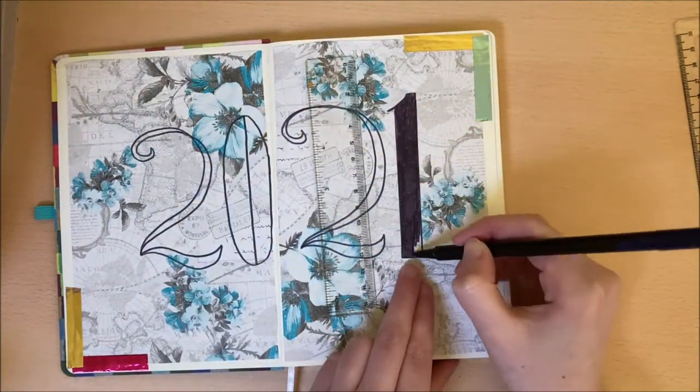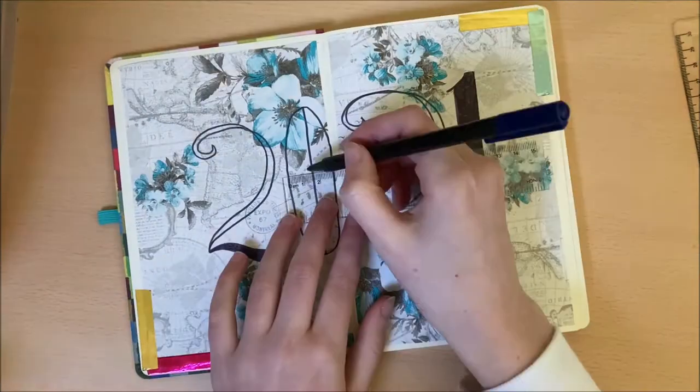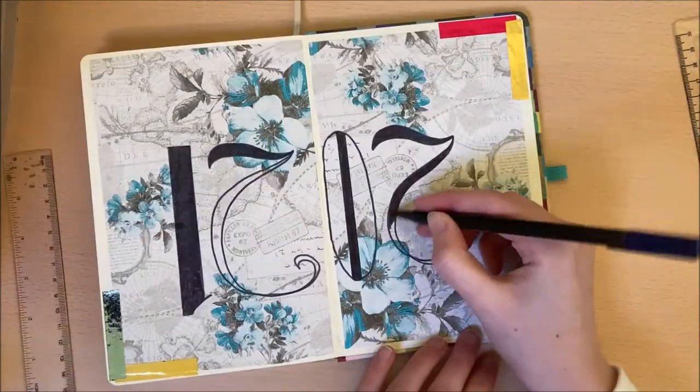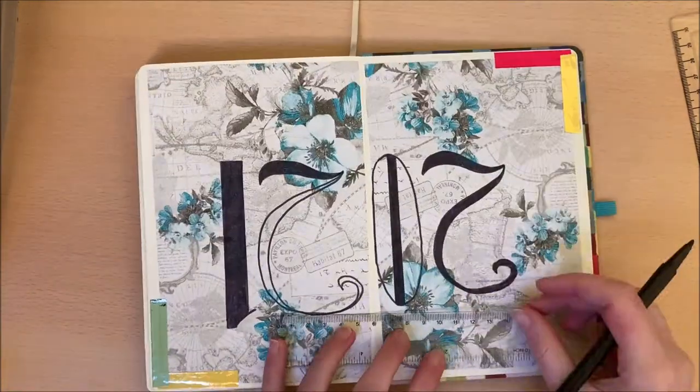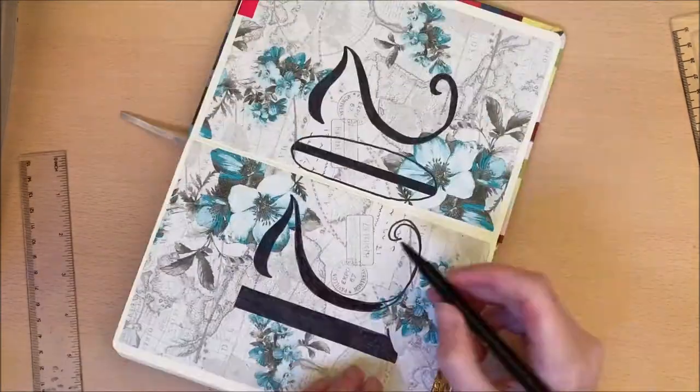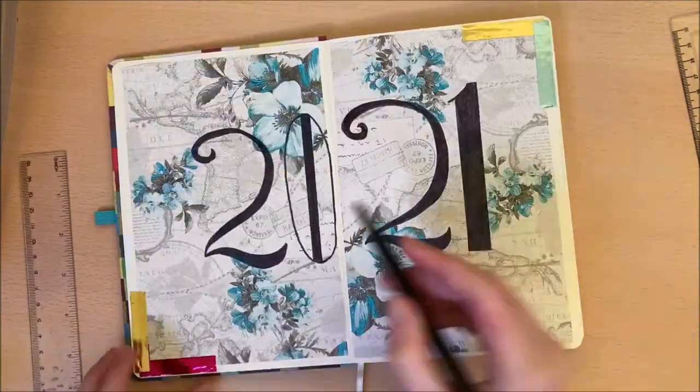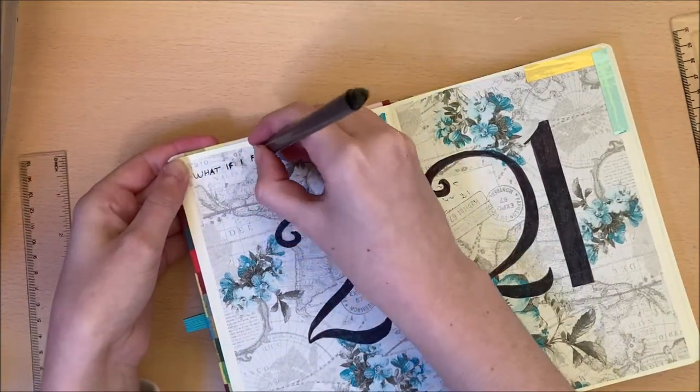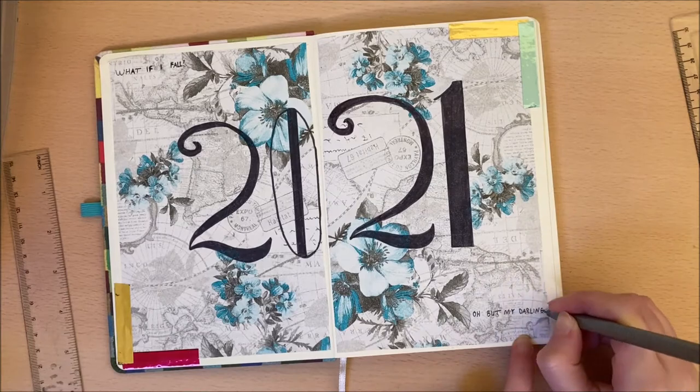I find it helpful to just roughly sketch out what I want to write with marker first, before going back in with a ruler and making it more exact. And finally just adding this cute quote to sum up how I want 2021 to be.